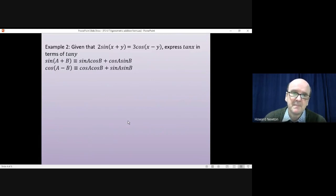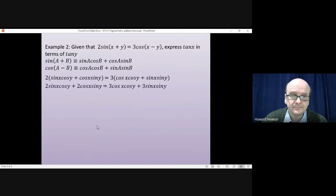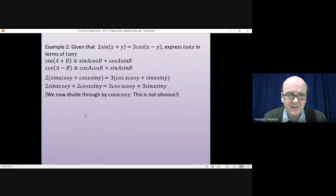Let's have a look at this. So using those two identities, first of all, sin(x + y) is sin x cos y plus cos x sin y. And then on the right-hand side, cos(x - y) will be cos x cos y plus sin x sin y. Multiplying out the brackets will give us that. And this is the line which is really not obvious.